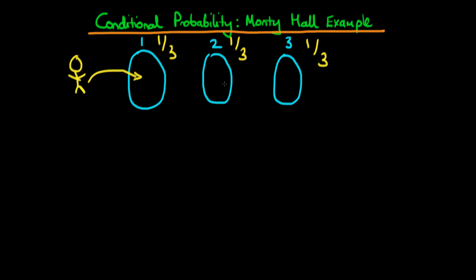Then the game show host opened one of the other doors — perhaps door two — to reveal that there was a goat behind that particular door. The contestant was then asked: would you like to stick with your choice of door one, or would you like to change and pick door three? We'd like to work out what the contestant should do in this situation.